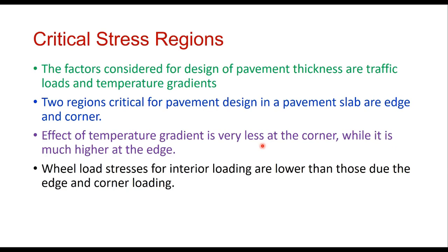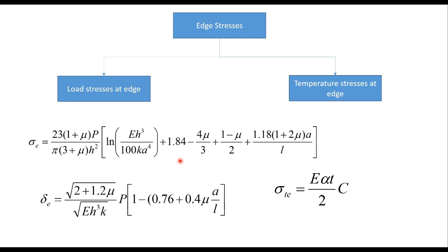For critical stress regions, the factors considered for pavement thickness design are traffic load and temperature gradients. Two regions are critical: the edge and the corner of the pavement slab. However, the effect of temperature gradient is very small at the corner but very high at the edge. Wheel load stresses for interior loading are lower than those due to edge and corner loading. Therefore, stresses at the edge due to wheel load, temperature, or both are critical.